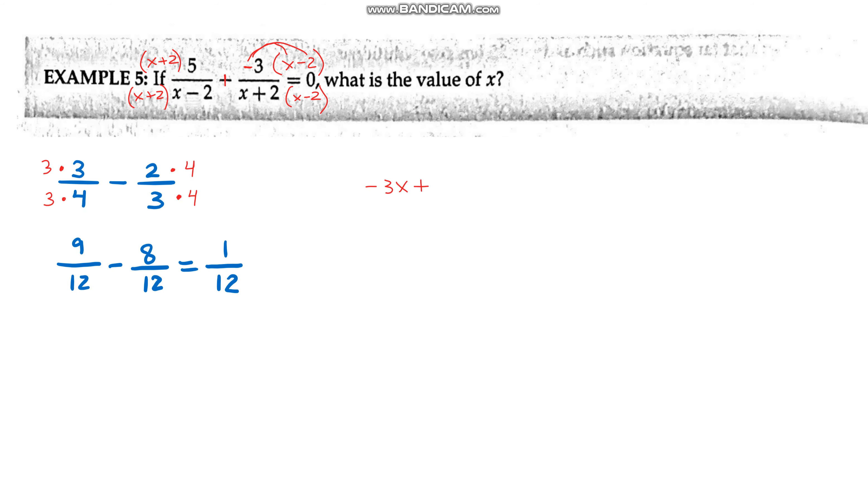Okay, so if I actually do this problem out, I would end up with 5x plus 10, and again I turn it into a plus and put the negative up here. So then it'd be minus 3x plus 6, all over that common denominator, equals 0. And then they'll typically combine the like terms on top and they should end up with 2x plus 16.